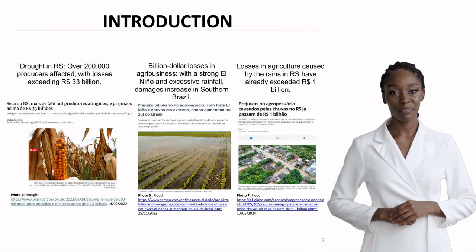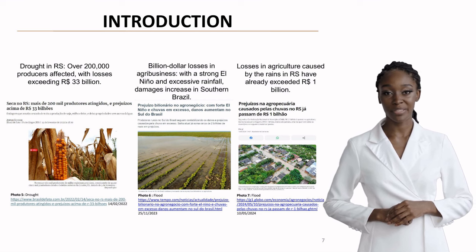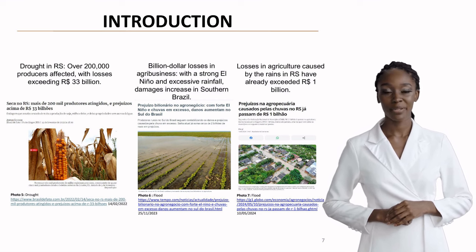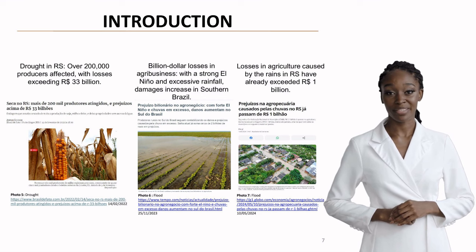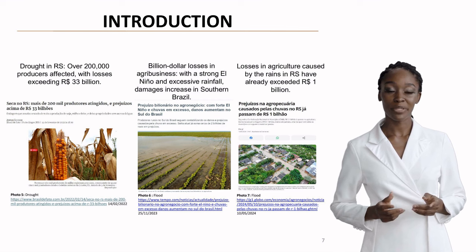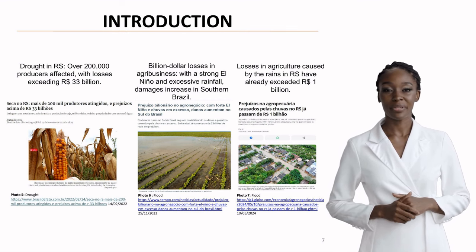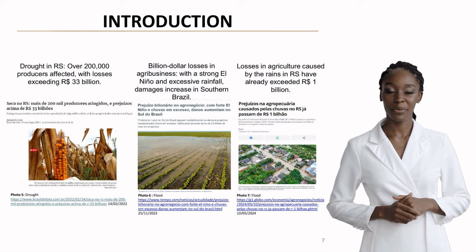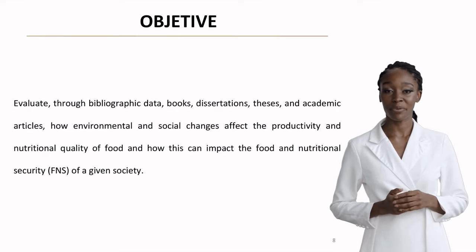The real-world implications are stark. In Brazil alone, we've seen devastating impacts on agriculture. Recent events have caused billions in losses, from severe droughts affecting over 200,000 producers to flood damage exceeding $1 billion in agricultural losses.